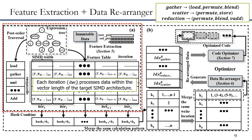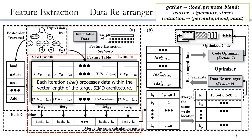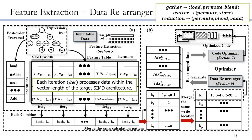We consider two computation patterns to be different when their instruction features are different, which results in different optimal code generation. Then, DEMV merges the columns with the same instruction features as well as the columns with the same write locations. The hash value of each column in the feature table is generated using hash functions. DEMV merges the columns with the same hash value to generate a HashMap, which reduces the memory footprint during code generation. After merging columns with the same hash values, DEMV continues to process the HashMap by merging columns with the same write locations.